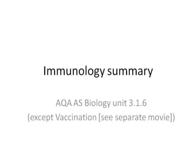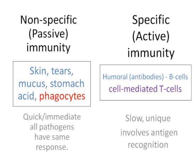Immunology: protection from antigens and pathogens. First of all, we need to discuss nonspecific and specific immunity. Nonspecific — which at GCSE you might have called passive — is where you've got natural, automatic defense mechanisms that are nonspecific. So skin as a layer, tears with enzymes in, mucus, stomach acid — all of those things are physical barriers.